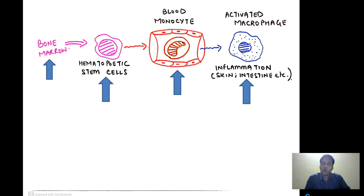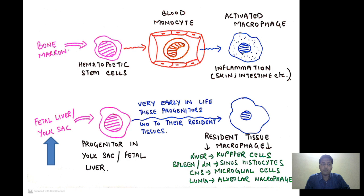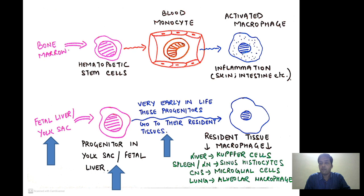The second important source of macrophages is the progenitors in the yolk sac and the fetal liver. These progenitors travel to resident tissues very early in life — to the liver, spleen, lymph node, central nervous system, or lungs — and they live there. That is why we call them resident tissue macrophages. The resident macrophage of the liver is called the Kupffer cell, that of the spleen or lymph node is called sinus histiocyte, that of the CNS is called the microglial cell, and that of the lung is called the alveolar macrophage.